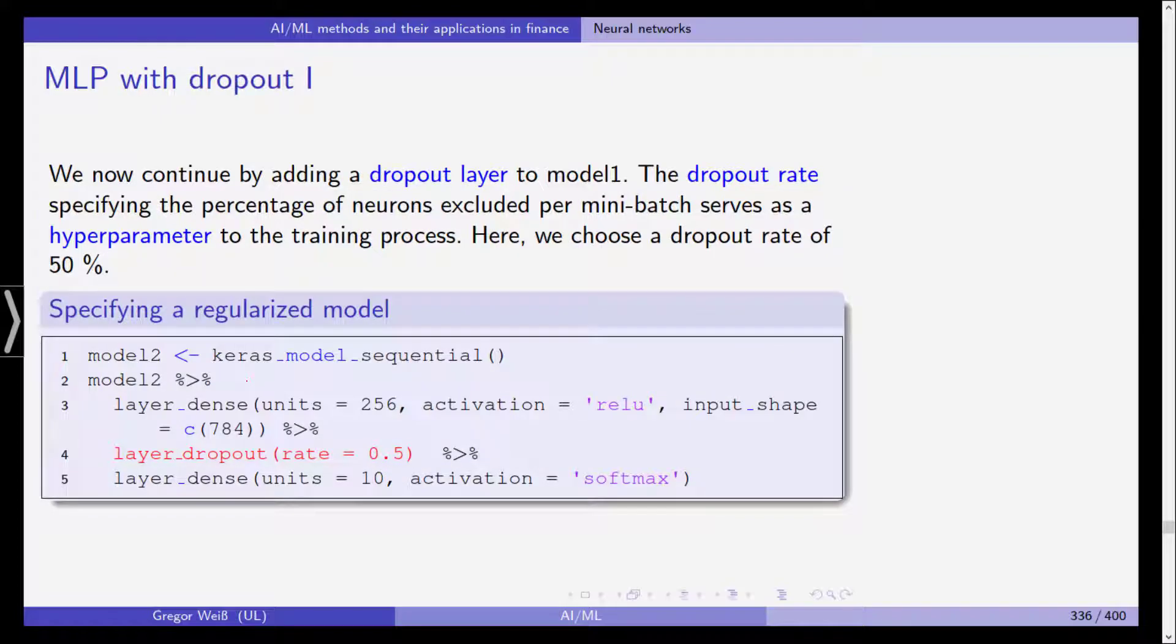Now we continue by adding a dropout layer to model one. The dropout rate specifying the percentage of neurons excluded per mini-batch serves as a hyperparameter and here we choose a dropout rate of 50%.